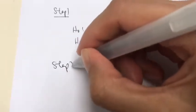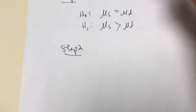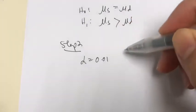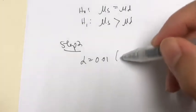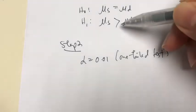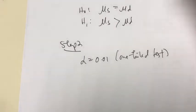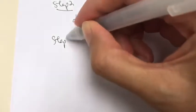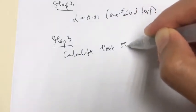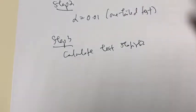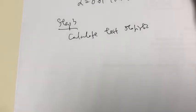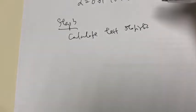Step 2: alpha is given as 1%, so α = 0.01. This is a one-tailed test because the sign for the alternate hypothesis points to a particular direction. Step 3: we want to calculate the test statistic, but because this is a pooled t-test, we have to find the estimate of the pooled variance first.